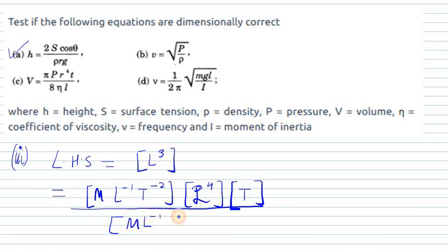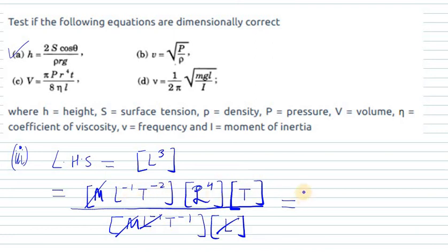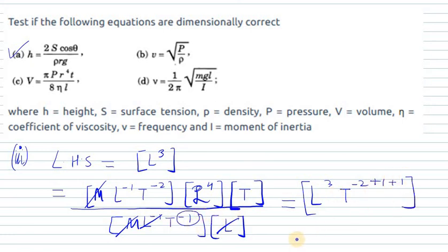So η is ML⁻¹T⁻¹, and L is again length. Now simplifying: M and M cancel. For L: L⁻¹ from pressure and L⁴ from R⁴ gives L³, then L⁻¹ from η and L from the denominator cancel. So we are left with L³. For T: T⁻² from pressure, T¹ from time period, and T⁻¹ from η gives T⁰. The right-hand side is L³, equal to the left-hand side. Part C is dimensionally correct.